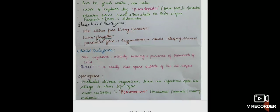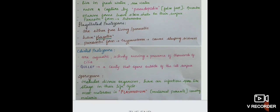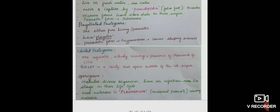Ciliated protozoans are aquatic. They are actively moving because they have thousands of hair-like structures called cilia. They have a cavity called gullet that opens outside the cell surface.